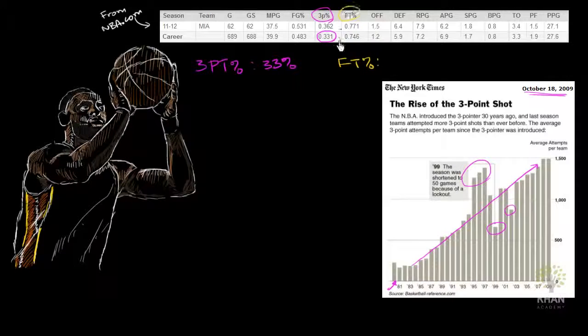And then your free throw percentage, your career free throw percentage. So this is free throw percentage. And this is in your career. We'll round to the nearest hundredths. So we'll round up right over here. That gets us to right at about 75%.